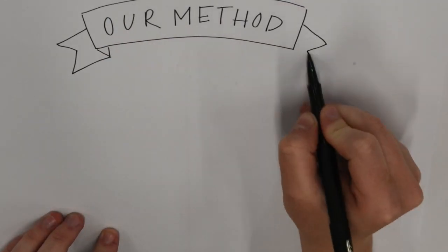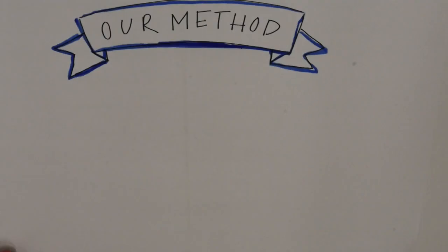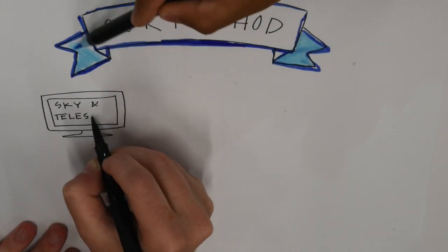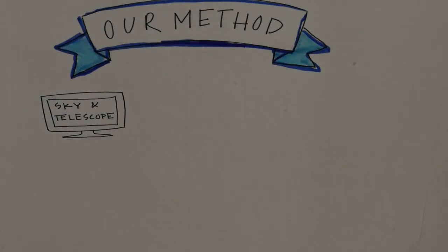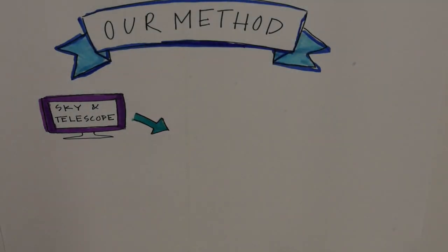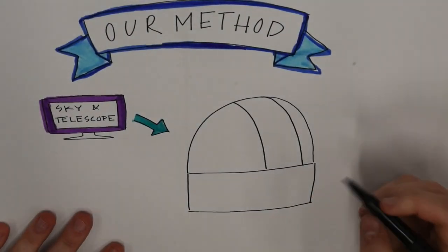Our method was pretty similar to Ole Rømer's, but we were able to use more specific, already calculated data from a handy website called Sky and Telescope. This website allowed us to see the exact times for when Io begins to transit Jupiter over a six-month period. We used this data to pick a time to observe and capture an image of a transit.